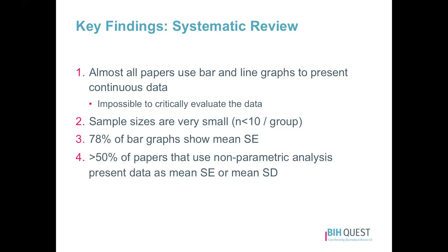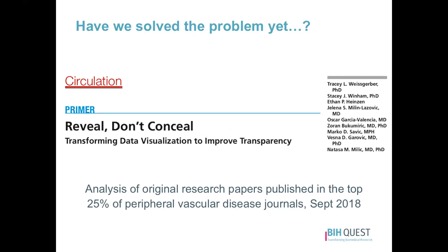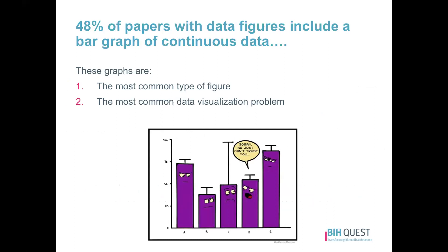You might be wondering — that was five years ago, have we solved the problem yet? Journals have been implementing policy changes, so is this fixed? In a follow-up study published late last year, we looked at original research papers published in the top 25% of peripheral vascular disease journals. We found that bar graphs of continuous data are still the most common type of data figure — nothing else is really even coming close. That also means they are the most common visualization problem, and so in terms of fixing visualization errors, this is still where we need to spend our time.